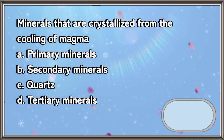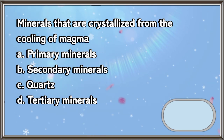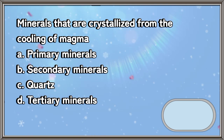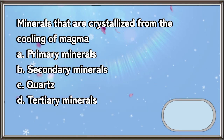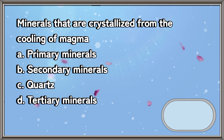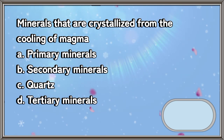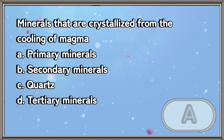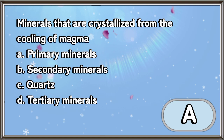Minerals that are crystallized from the cooling of magma: A. Primary minerals, B. Secondary minerals, C. Quartz, D. Tertiary minerals. The answer is letter A.